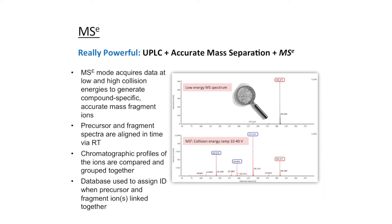...we get a lot of information, because now we acquire data at both a low and a high collision energy, which generates compound-specific accurate mass fragment ions. This precursor and fragment ion spectra which we collect become aligned in their retention time. Their chromatographic profiles are processed for each ion, then compared and grouped together.